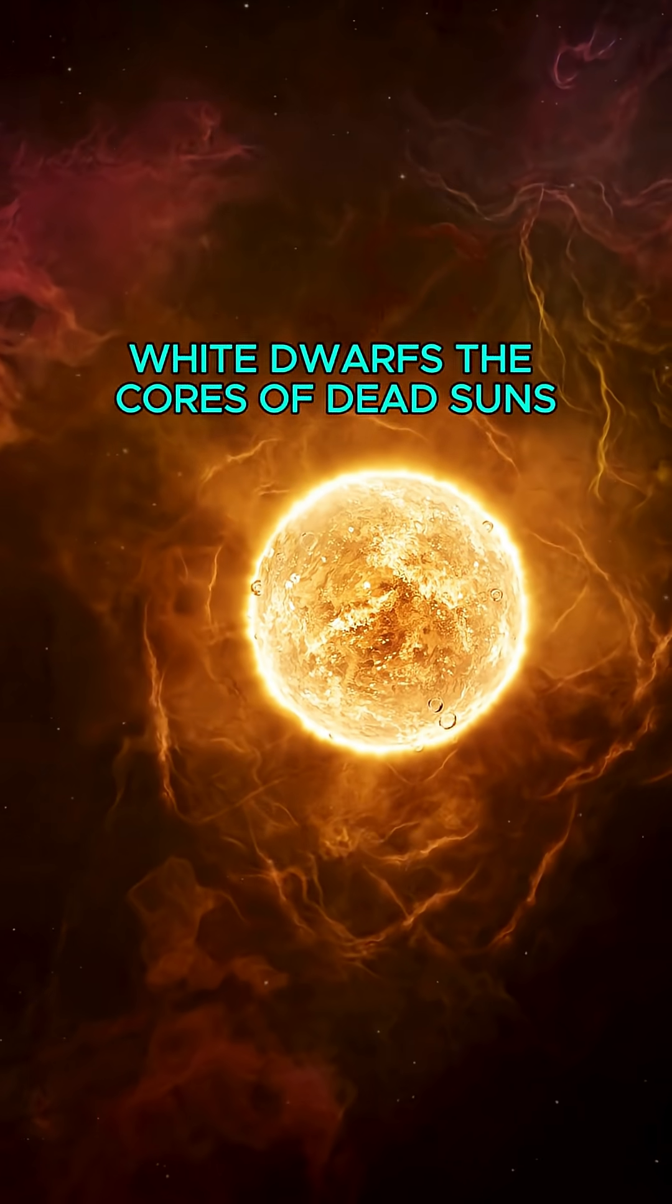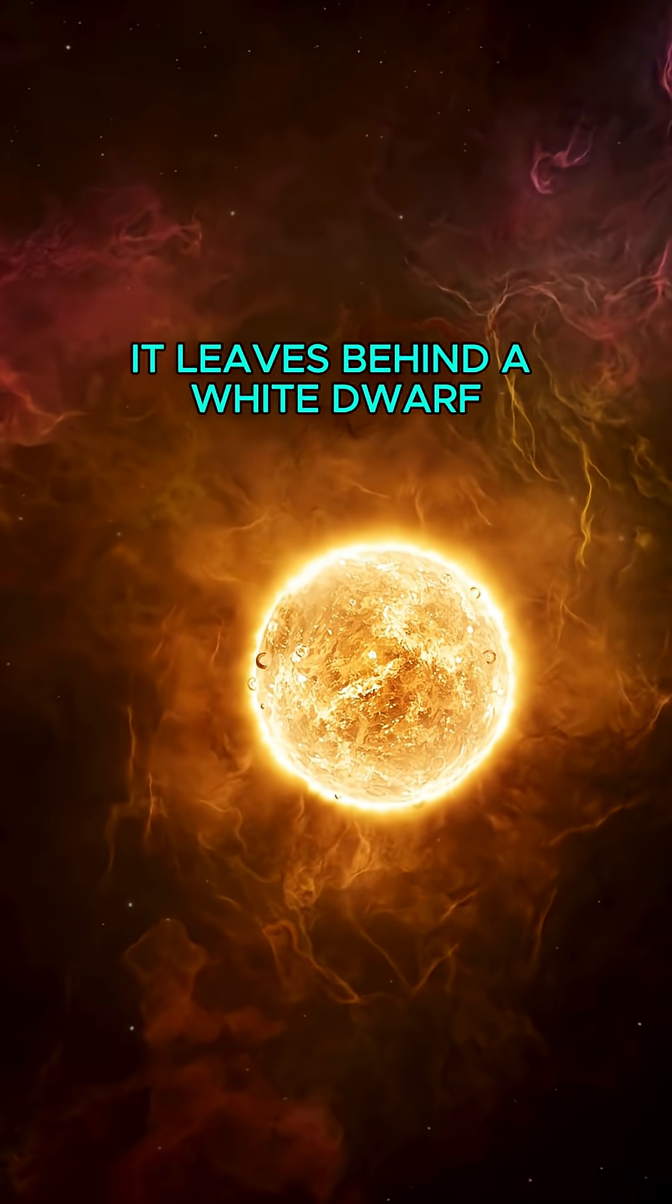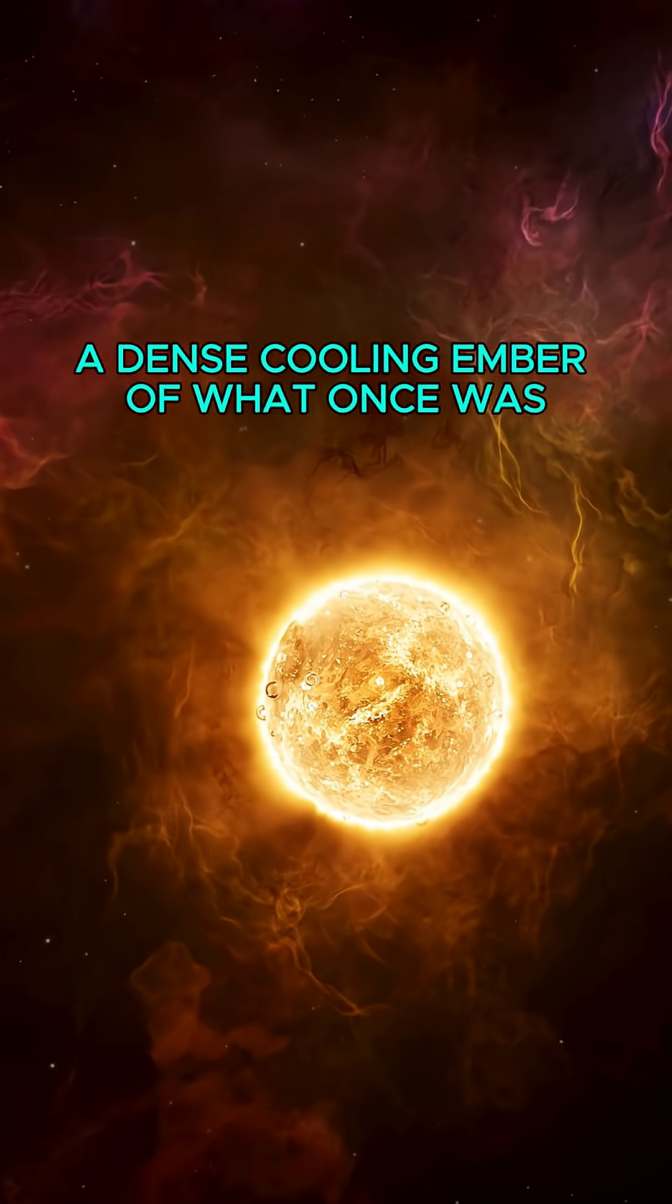Number 3: White Dwarfs - The cores of dead suns. After a star like our sun dies, it leaves behind a white dwarf, a dense, cooling ember of what once was.